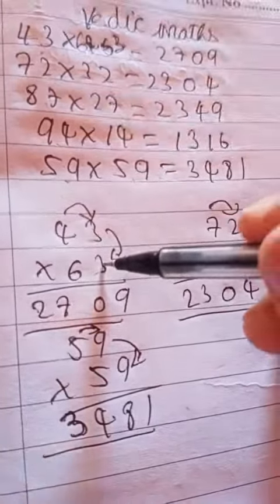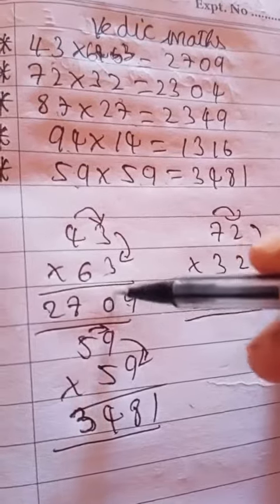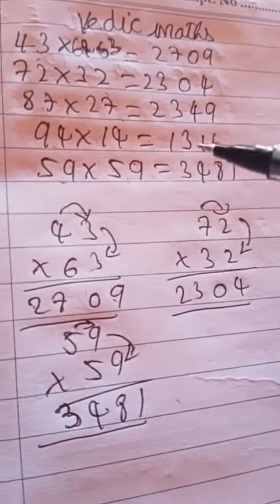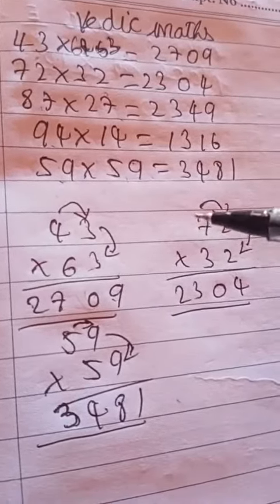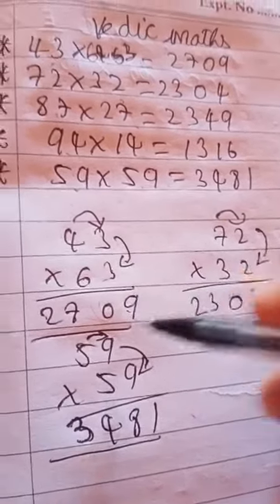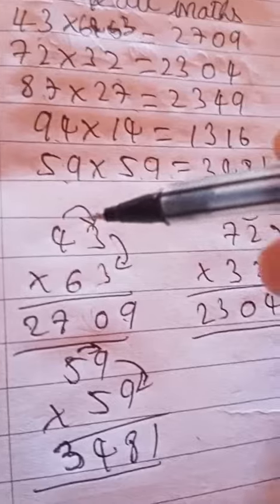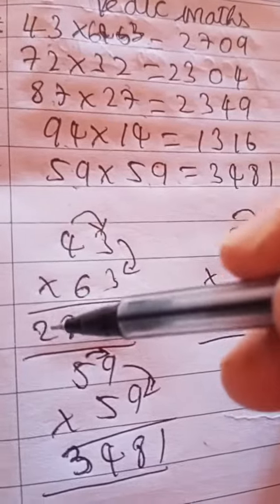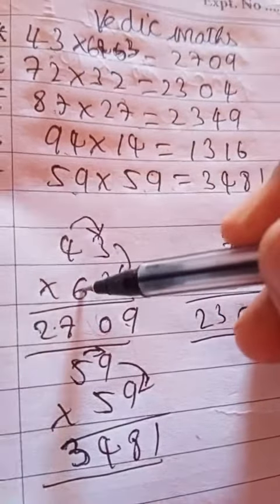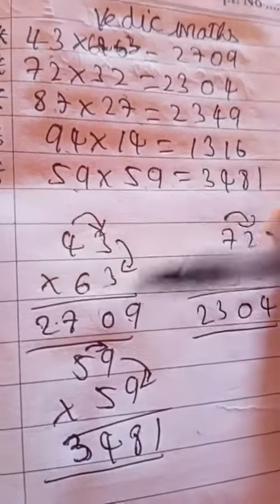Let's see: 3 into 3 is 9. The total number is 10. Now we can do the total number. How do you do this? 4 plus 6 is 24. 24 plus 3 is 27. This is the answer.